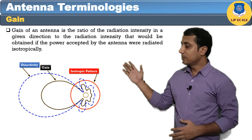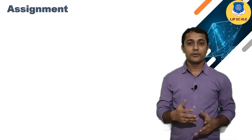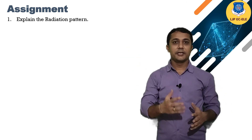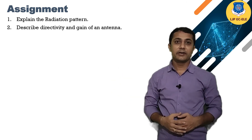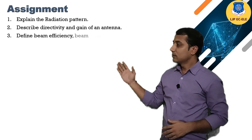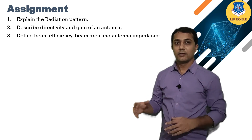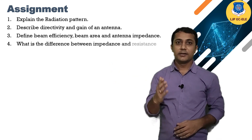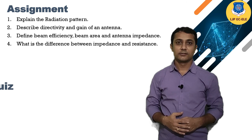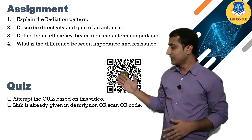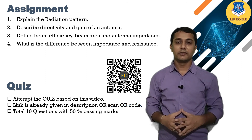That's all from the terminologies of antenna and wave propagation. We will see other terminologies in the next section. There is an assignment for you with the following questions: 1. Explain the radiation pattern. 2. Describe the directivity and gain of an antenna. 3. Define beam efficiency, beam area, and antenna impedance. 4. What is the difference between impedance and resistance? 5. You can also attempt a quiz based on this video — the link is in the description or scan the QR code. Total 10 questions with 50% passing marks.